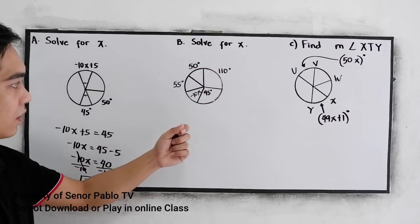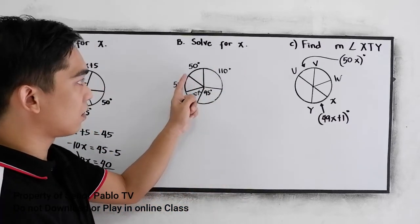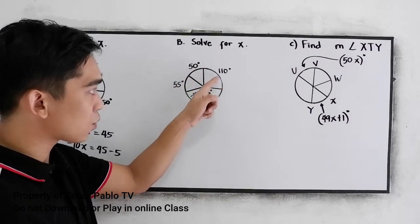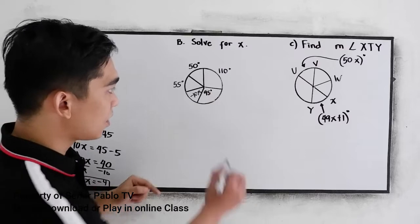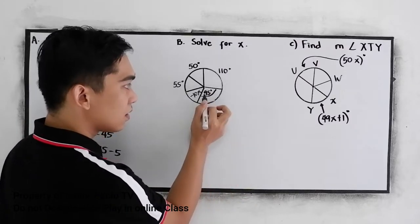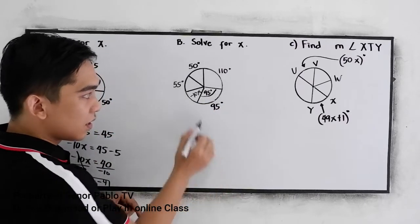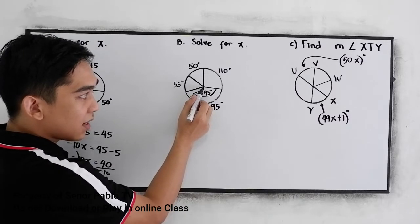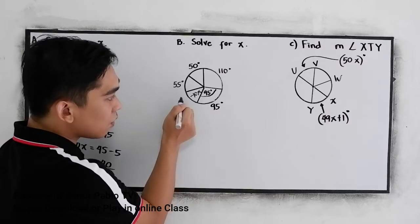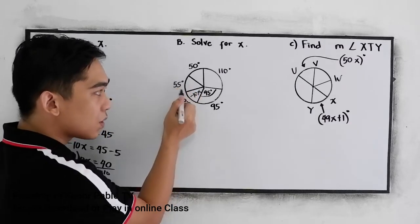In letter B, solve for X. We have the following arcs: this arc measures 50 degrees, this one is 110 degrees. We have the central angle which is 95, so the arc here also measures 95 degrees. And we have the central angle negative 10X, so this arc is also negative 10X. The last given is 55 degrees.